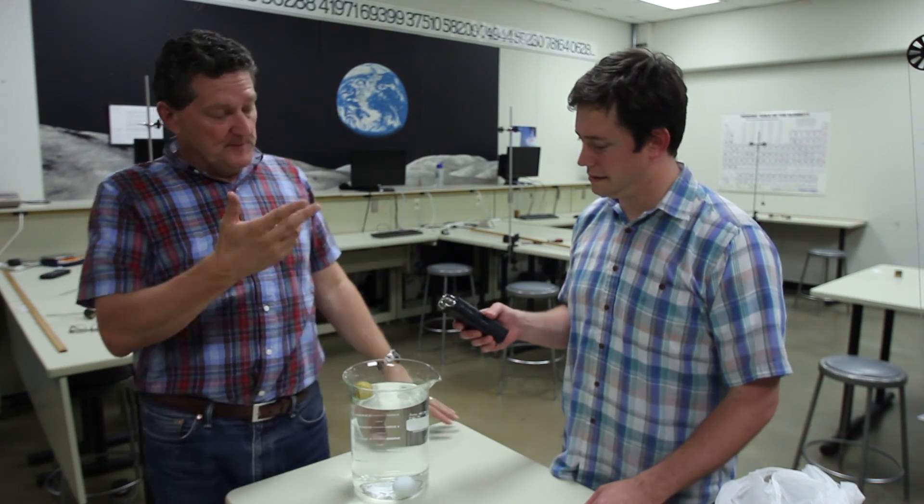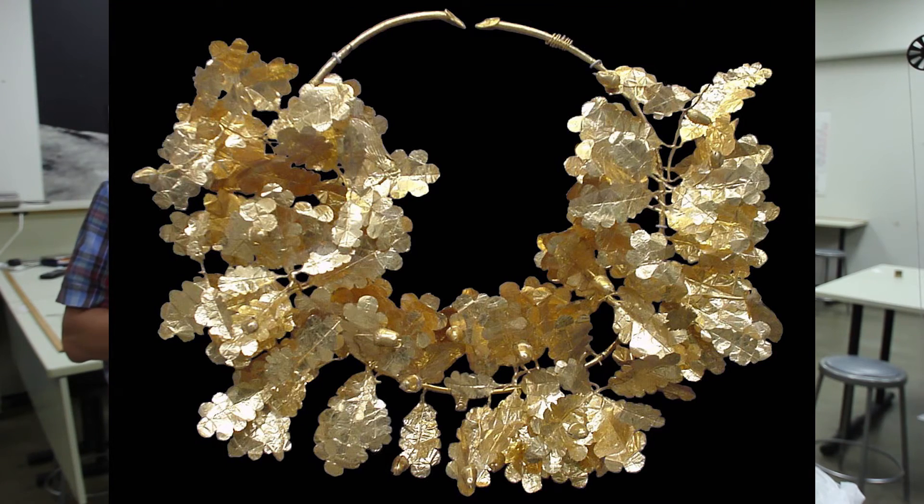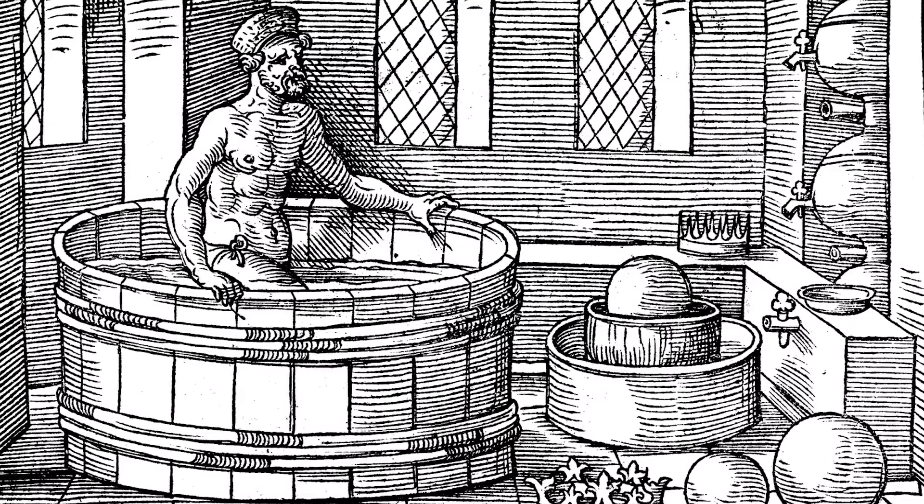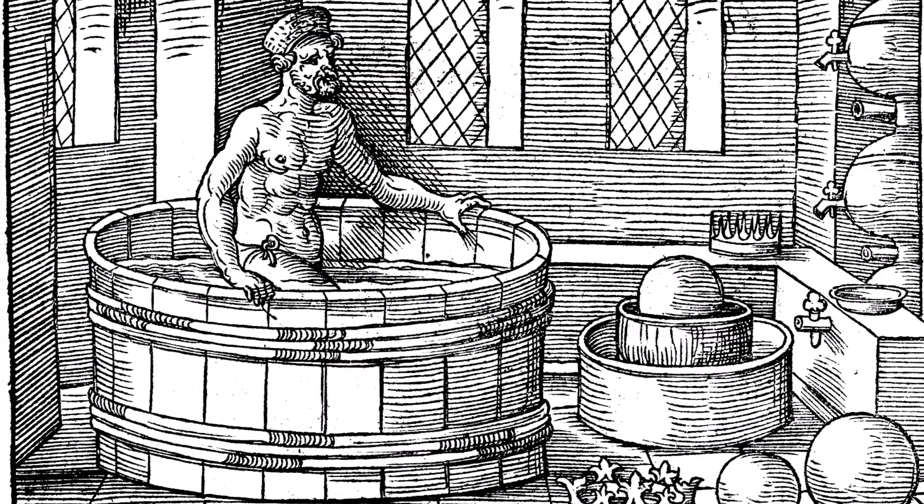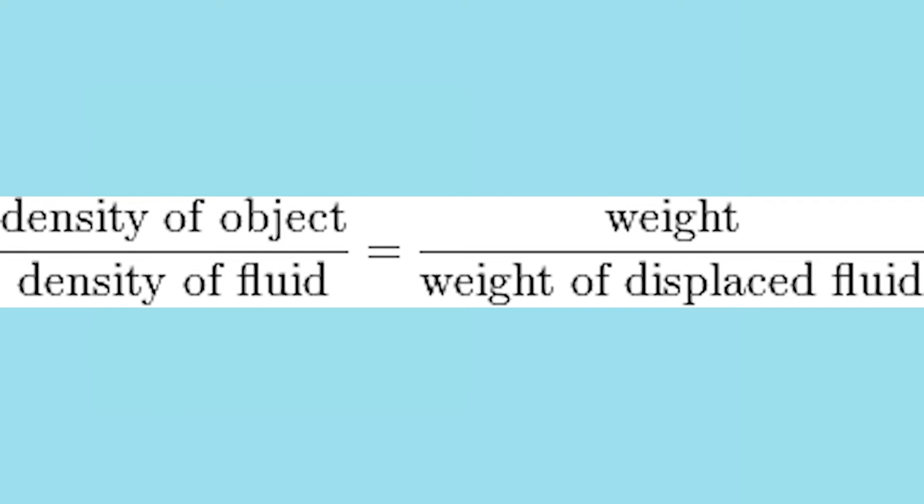Archimedes actually used this at the king's behest. The legend goes that the king had given gold to a goldsmith to fashion into a votive crown for the temple. When it came back, he wasn't convinced the goldsmith hadn't siphoned off some gold for personal use. Archimedes figured out you could test the density by submerging the crown in water — that's where he came up with his principle. He also found out the goldsmith was cheating. Who knows what happened to him.